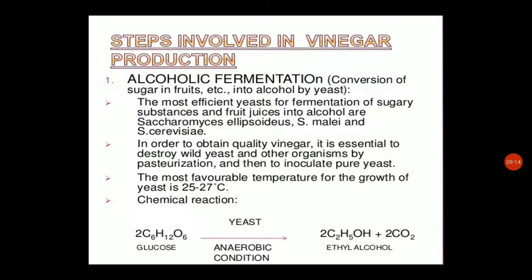We will destroy wild yeast naturally and replace it with pure yeast culture. In wine production, wild yeast is present naturally, but we destroy it and add pure yeast culture to get good quality vinegar. The temperature for alcoholic fermentation is 25 to 27 degrees Celsius. Sugars from fruits undergo fermentation in anaerobic conditions, producing carbon dioxide and alcohol.